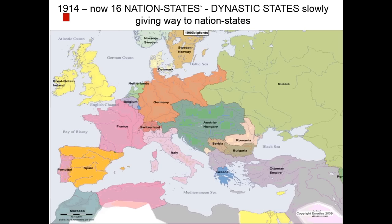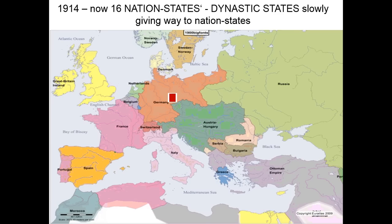If we jump on a hundred years later to 1914 on the eve of the First World War, we can see that some progress has been made with increasing pressure from nationalists in the preceding hundred years, and now we have about 16 distinctive nation states in Europe, with these dynastic states slowly giving way. We can see now a unified Germany, still the Austro-Hungarian Empire, the Russian Empire and the Ottoman Empire, which is the first to begin to decay. It's at the fringes of the Ottoman Empire that some of these nation states begin to emerge, like Romania and Bulgaria.